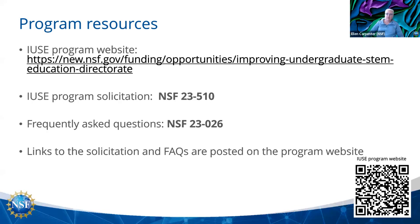We're going to go over a lot of information today. If you have additional questions, going back to our program website and program solicitation might be good places to start. The easiest way to find our website is to use a search engine and look for NSF IUSE. Our current program solicitation is NSF 23-510. These things do change occasionally, so always check to make sure you're working with the current solicitation. We also have a set of frequently asked questions: NSF 23-026. All of these can be found with links through our web page.